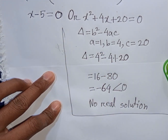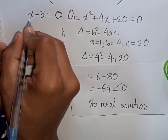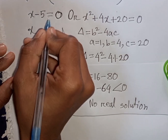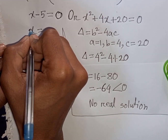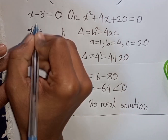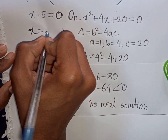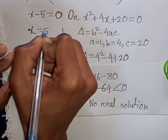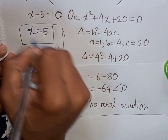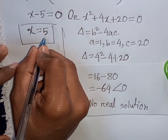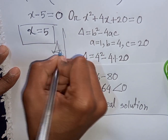Now from here x minus 5 is equal to 0 — take minus 5 to the right side, so this will be plus 5. So x is equal to 5. This is the value of x. This is our final answer.